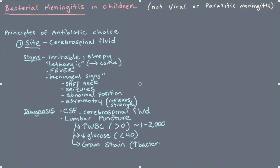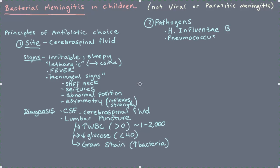With bacterial meningitis, the second prudent prescribing principle is to know the usual pathogen. If spinal fluid has lots of white cells and low glucose, even with a negative gram stain, one can identify the usual pathogens because the list is short in normal children. Those bacteria include Haemophilus influenzae type B, a second bacteria called pneumococcus — which also causes pneumonia — and a third bacteria called meningococcus. Those are the prominent bacteria in normal children with bacterial meningitis.